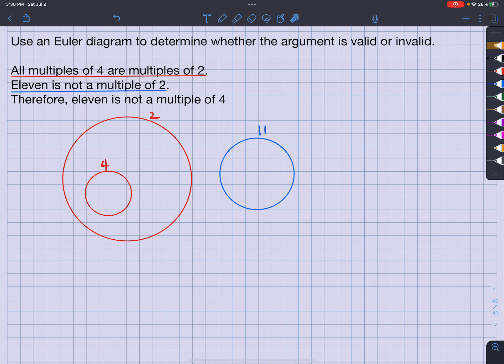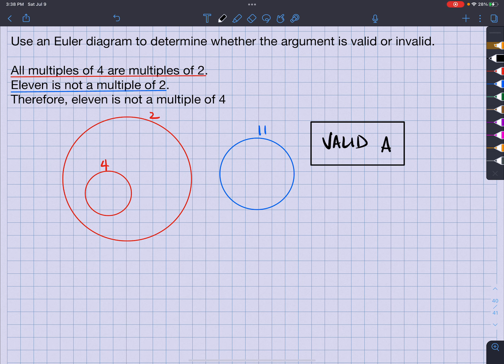Look, 11 is not crossing 2 nor 4. So this is definitely valid, which is choice A. And I hope that helps. Any questions, let me know. Later. Bye.